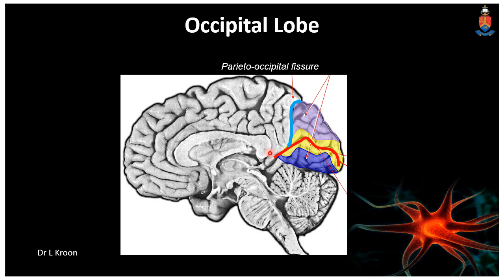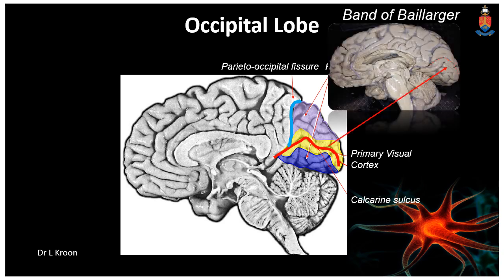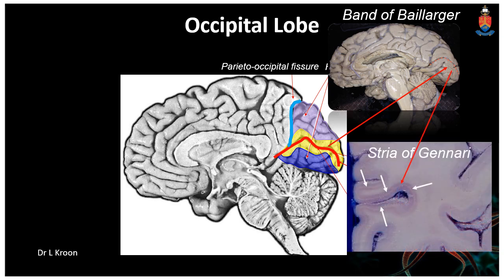In the occipital lobe, we can see the calcarine sulcus, around which we find the primary visual cortex, which is further surrounded by the visual association areas, or higher level visual cortex. Looking at the myeloarchitecture of the calcarine, we find a thickened outer band of myelinated fiber named the band of Baillarger. This band is visible to the naked eye and gives the primary visual cortex its name — hence it's called the stria of Gennari.